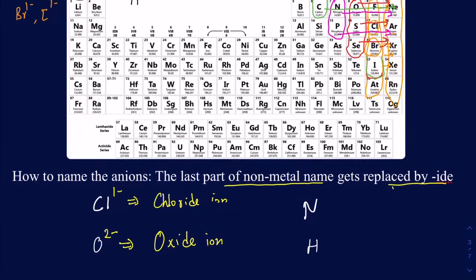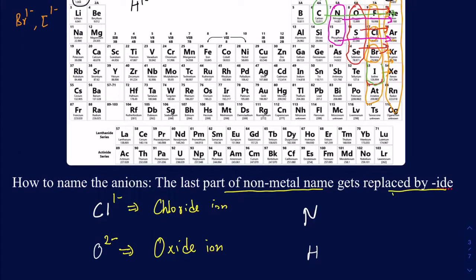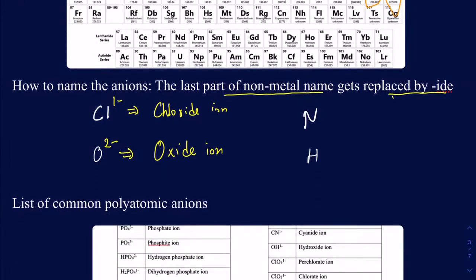What about nitrogen? It's going to have a 3− charge because it's three electrons away from the noble gas. Once nitrogen gets a 3− charge, it's not called nitrogen anymore — it's called the nitride ion. And hydrogen, which we talked about, gets a 1− charge and is called the hydride ion.